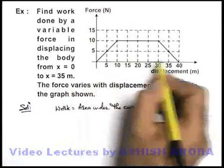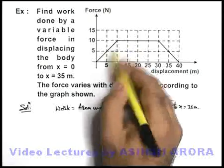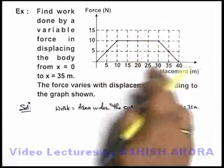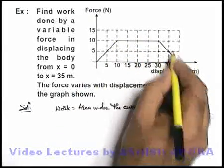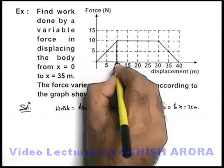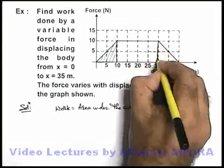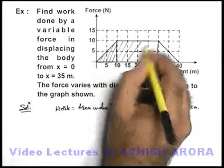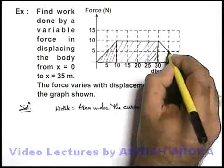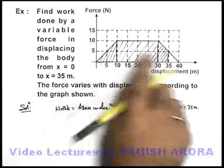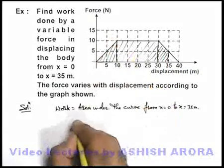That means from this point to this point. If we wish to calculate the area, the whole segment or whole this area under the curve we divide into three segments: one is this triangle, other is this rectangle, and then this small trapezium. If we add up these three areas we are going to get the total work.